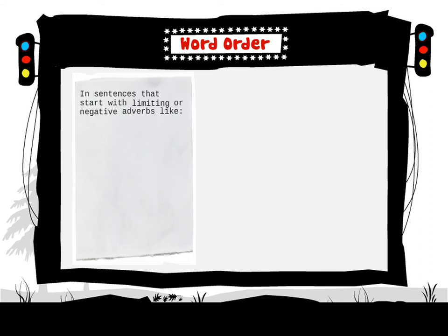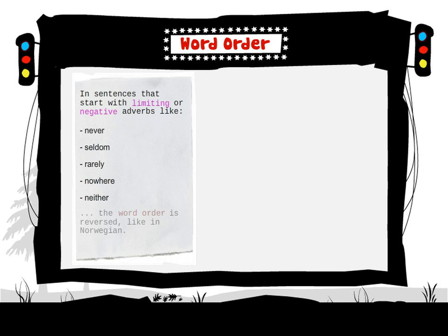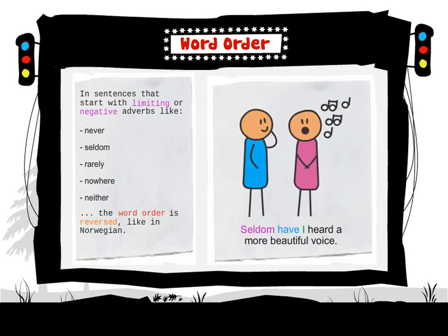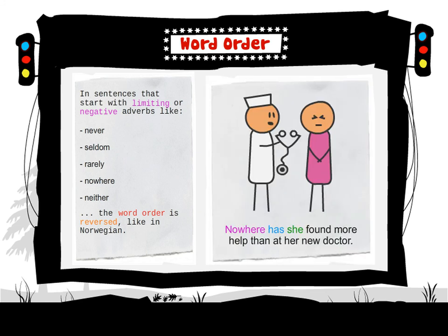In sentences that start with limiting or negative adverbs — like never, seldom, rarely, nowhere, neither — the word order is reversed, like in Norwegian. For example: 'Never have I seen such a storm.' 'Seldom have I heard a more beautiful voice.' 'Nowhere has she found more help than at her new doctor.'